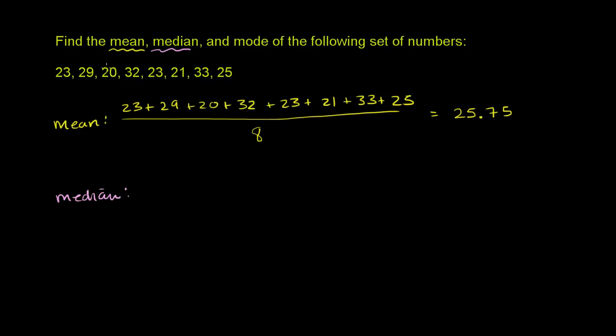So it looks like the smallest number here is 20, then the next one is 21. Then we go, there's no 22 here. There are two 23s, 23 and a 23. And no 24s, there's a 25. There's no 26, 27, 28, there is a 29. Then you have your 32, and then you have your 33.